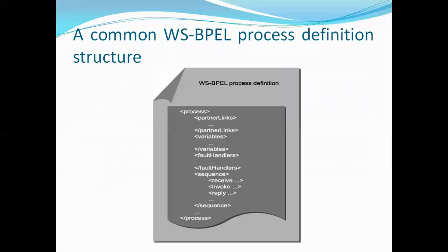Here I am showing a common web service BPEL process definition structure. Different tags are used: process start and process end tags, partner link start and end tags, variable start and end tags. If a fault or error occurs, there is a fault handler start and fault handler end tag to control that.